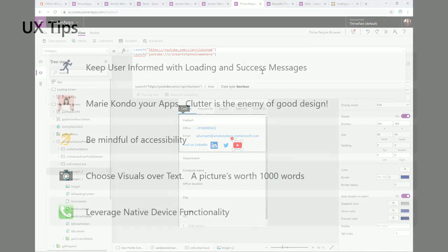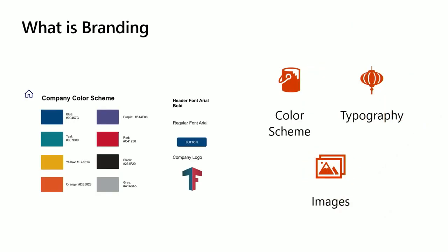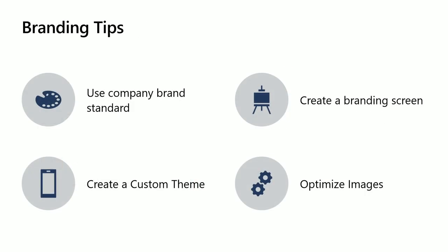Let's switch to the last piece of our pyramid — branding. This is the icing on the cake. When I talk about branding, I mean defining a good color scheme, typography, and images. The one big tip is to use your company brand standard. Most companies have a PDF from their marketing department with company logo, color codes, and typography. When building a Power App, take that brand standard and use it. I like to create a branding screen in my app so I have a one-stop shop for my brand without opening the PDF every time.